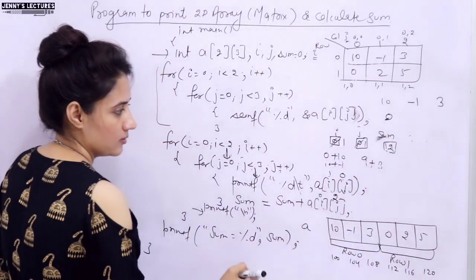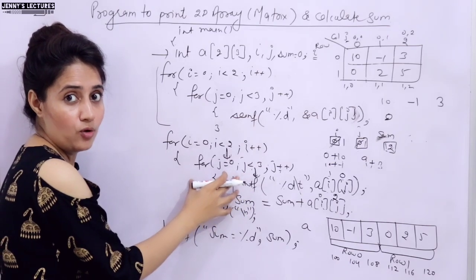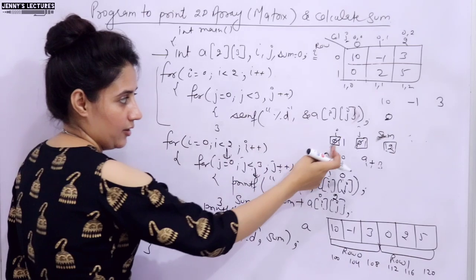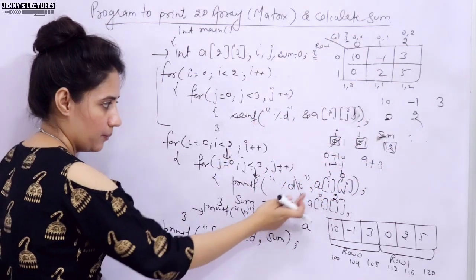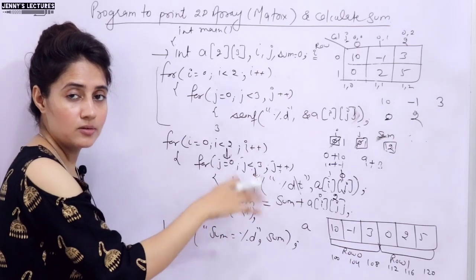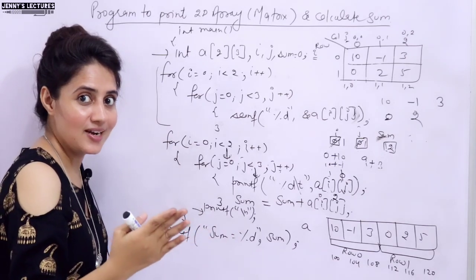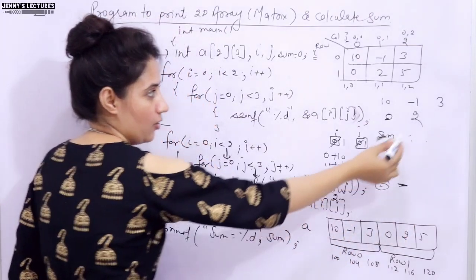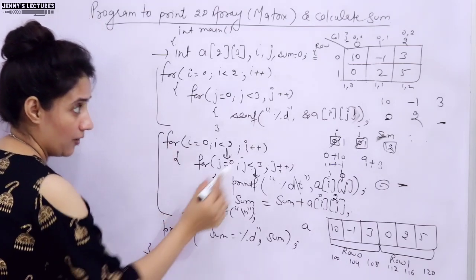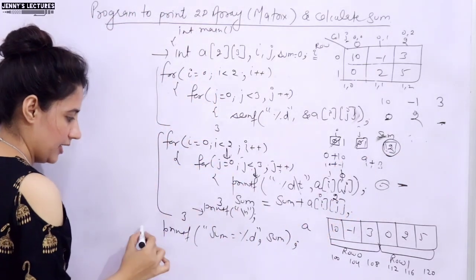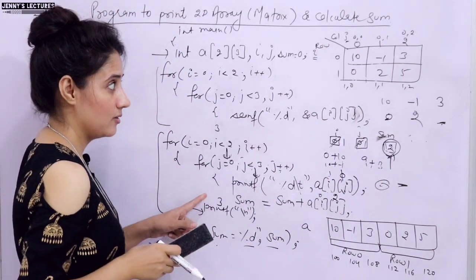Continuing the dry run with i = 1: j = 1 gives a[1][1] = 2, which is printed and added to sum. Similarly a[1][2] = 5 is processed. After the outer for loop completes, the sum of all elements has been calculated. Then we print: printf("sum = %d\n", sum), which outputs the total sum.